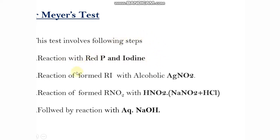In the second step, the alkyl iodide formed in the first step is then reacted with alcoholic silver nitrite, AgNO2, to give nitroalkanes. Then in the third step, the formed nitroalkane is then reacted with nitrous acid, HNO2.